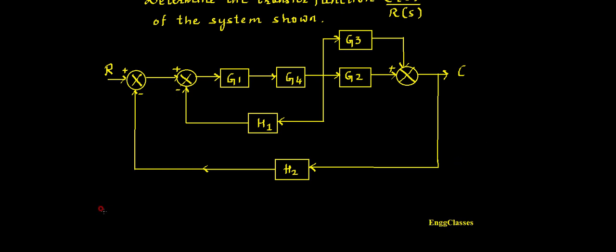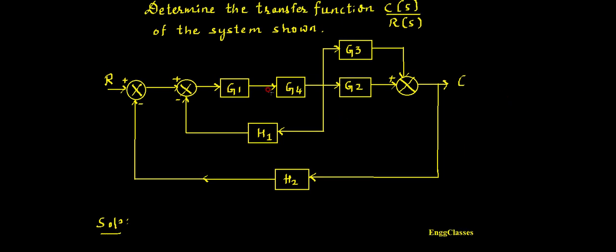Let me start with the solution. If I look at this block diagram, the blocks G1 and G4 are in series — let me show you — these two blocks are in series, so I can reduce them and write it as G1 into G4. Similarly, blocks G2 and G3 are in parallel, so I can reduce and write one block with G2 and G3 connected in parallel.